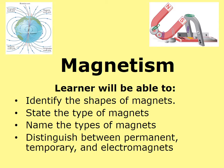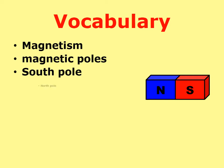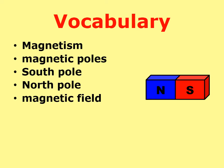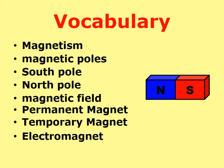We are back with another science lesson. We continue with our physics or physical science unit, and today we're going to talk about magnetism. You will be able to identify the shapes of magnets, state the type of magnets, name the types of magnets, and distinguish between permanent, temporary, and electromagnets. Vocabulary: magnetism, magnetic poles, south pole, north pole, magnetic field, permanent magnet, temporary magnet, electromagnet.